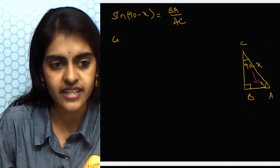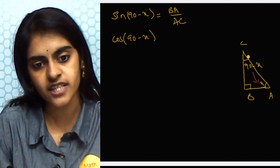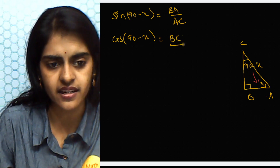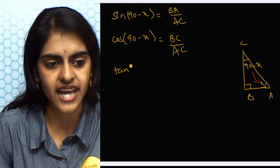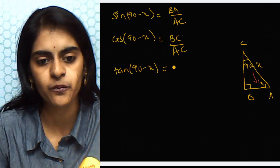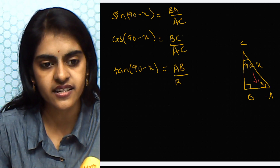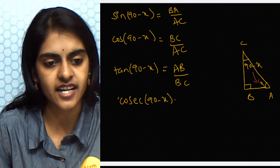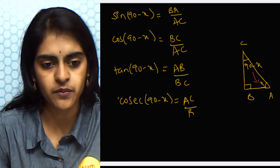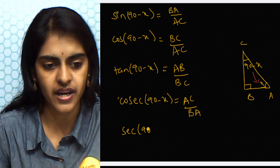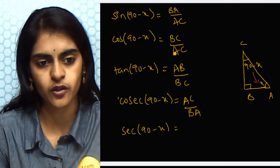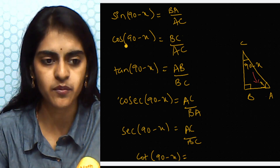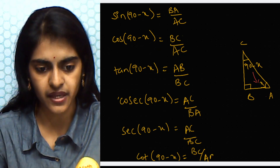Cos(90° − x) = adjacent over hypotenuse = BC/AC. Tan(90° − x) = opposite over adjacent = AB/BC. Cosecant(90° − x) = reciprocal of sine = AC/BA. Secant(90° − x) = reciprocal of cos = AC/BC. Cot(90° − x) = reciprocal of tan = BC/AB.